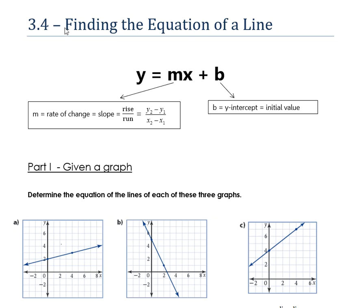In this short video we're going to talk about finding the equation of a line. We have three different parts, but first I'll cover finding the equation from a graph. I want to review this really important formula: y equals mx plus b. You have to memorize that. The m stands for the rate of change or the slope — we can count out rise over run or use a formula. The b stands for the y-intercept, also called the initial value.